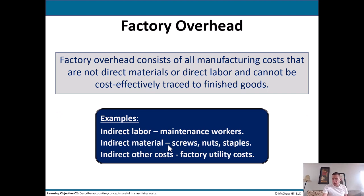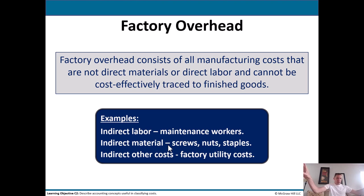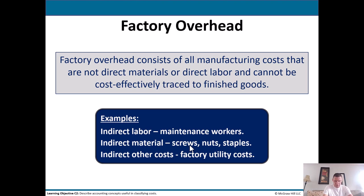The third and final category is factory overhead. This consists of all manufacturing costs that are not direct materials or direct labor and cannot be cost-effectively traced to finished goods. Examples: indirect labor would be maintenance workers who could be working on machines for bikes, tricycles, or scooters — we're paying these people wages so we still have to allocate those indirect costs. Indirect materials include things like screws, nuts, and staples — things you wouldn't necessarily use a lot of. Other indirect costs include factory utilities: power, water, internet. Just remember three categories: direct materials, direct labor, and everything else goes into the factory overhead bucket.